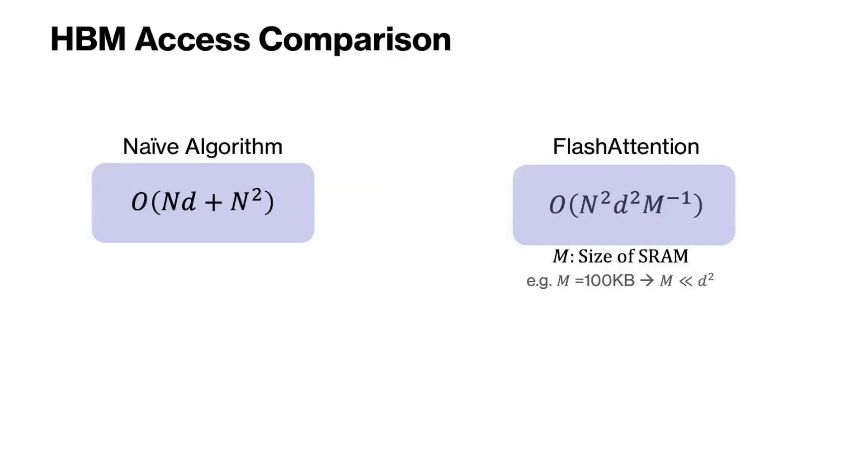Flash attention computes the exact attention, not an approximate attention. While the number of arithmetic operations are higher than the standard attention, the advantage comes with the significant reduction of memory accesses to the HBM. Comparing the number of HBM memory accesses in the naive algorithm with flash attention, we get big O of nd plus n squared for the naive algorithm, and big O of n squared d squared divided by m, where m is the size of SRAM.